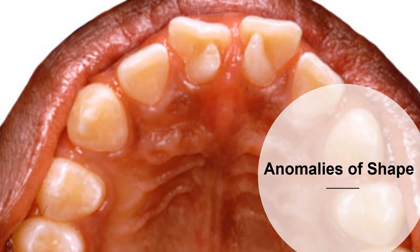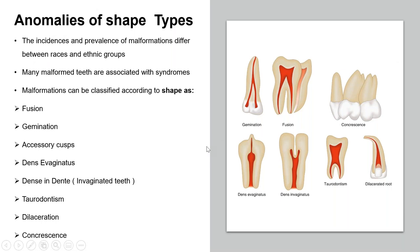The last part of today's presentation is anomalies of shape. Incidence and prevalence of malformation differ between races and ethnic groups. Many malformed teeth are associated with syndromes. Malformation can be classified by shape as either fusion, gemination, accessory cusp, dens evaginatus, dens invaginatus, taurodontism, dilaceration, or concrescence.